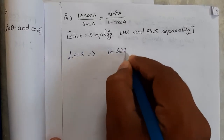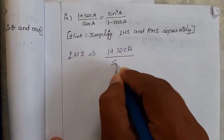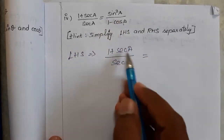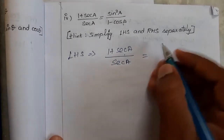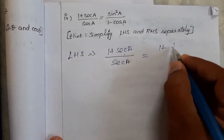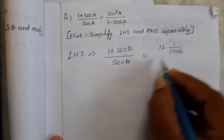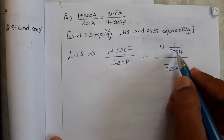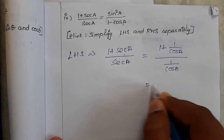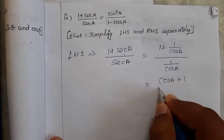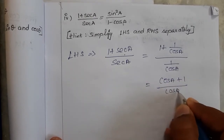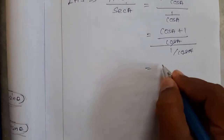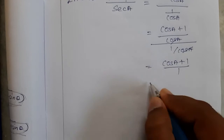LHS is 1 plus cot A divided by cot A. We need to write this in terms of sin and cos, so let me write cot A as 1 divided by cos A. Divided by cot A, which is also 1 by cos A. Taking LCM, it becomes cot A times cos A plus 1, divided by cos A, the whole divided by 1 by cos A. The cos A terms get cancelled.